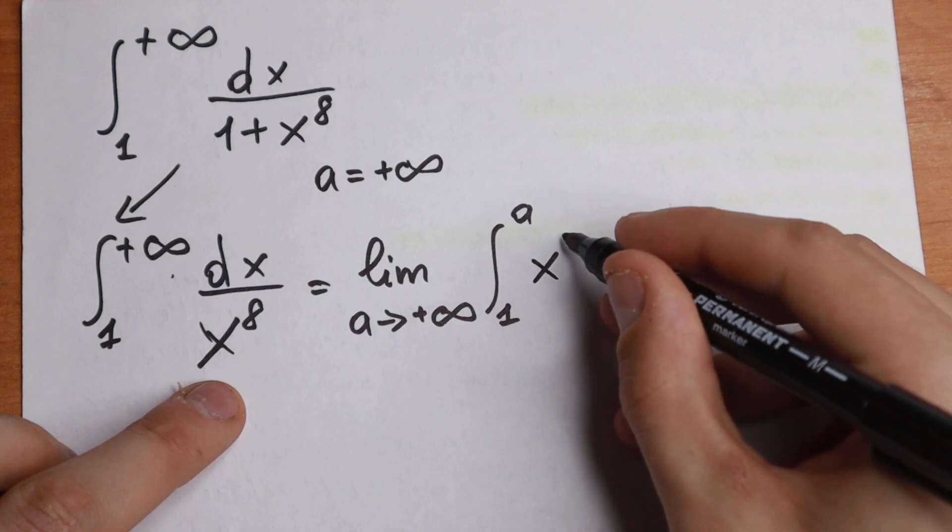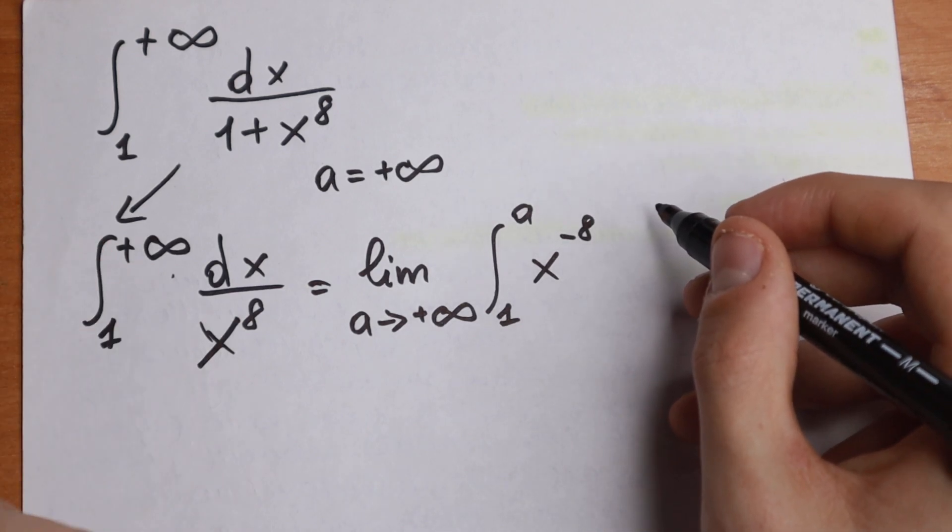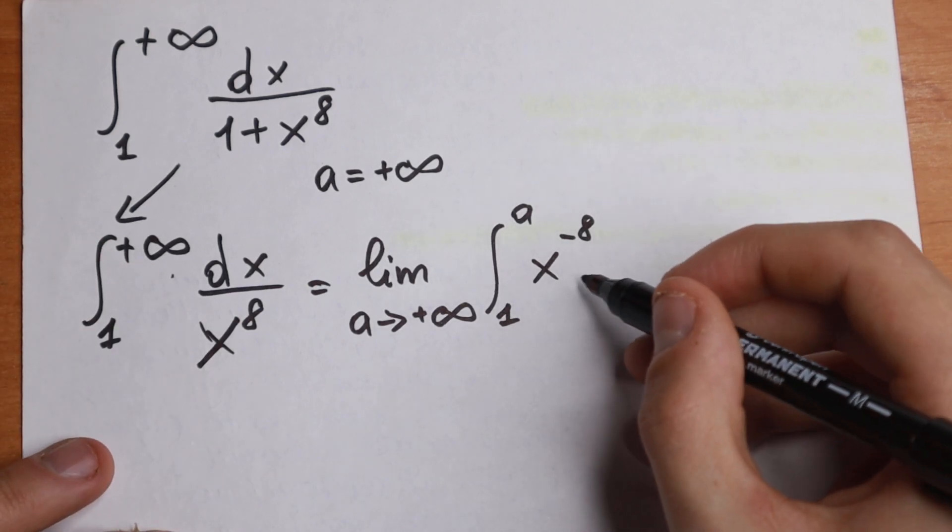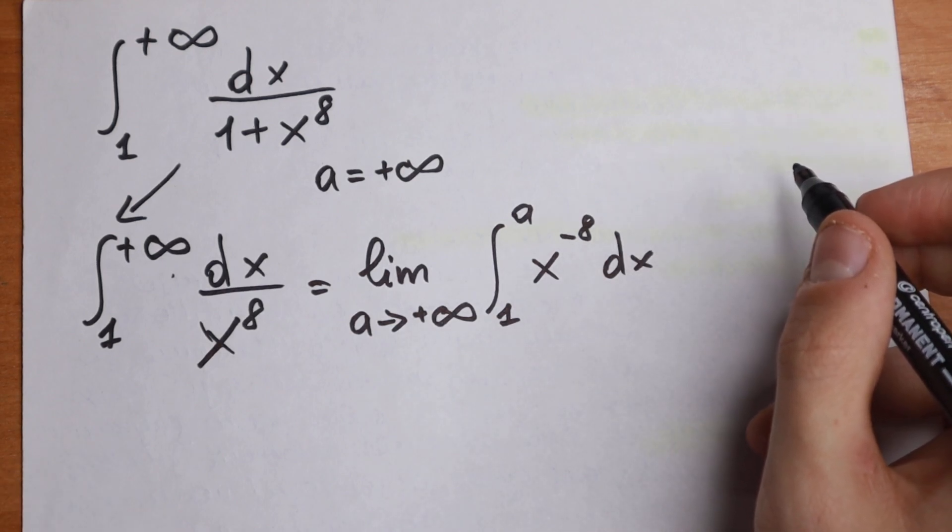This is our table case, x to the minus 8th power. We just bring it to our denominator dx and let's integrate this. How can we integrate this?